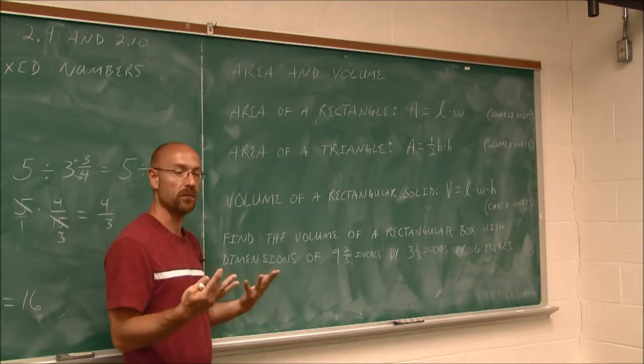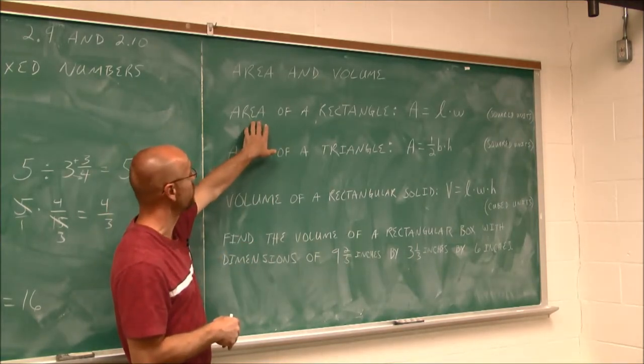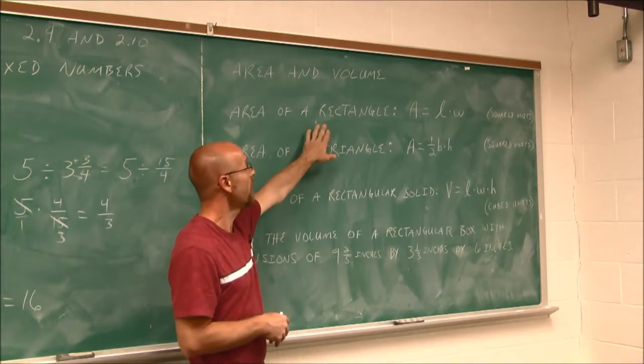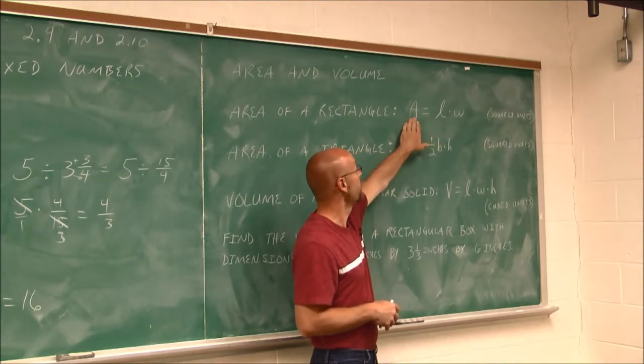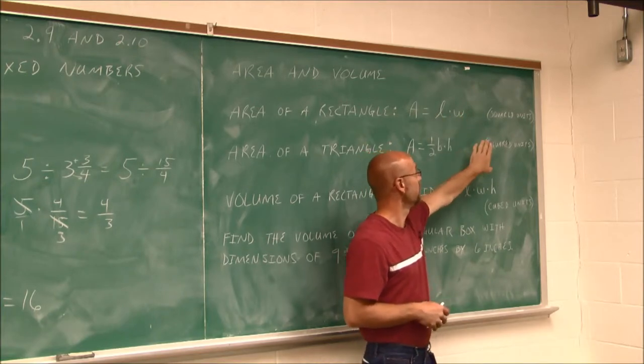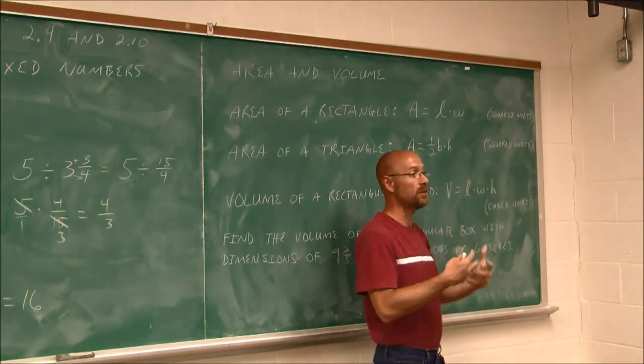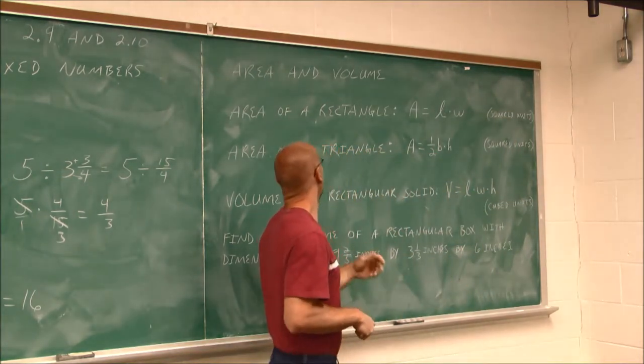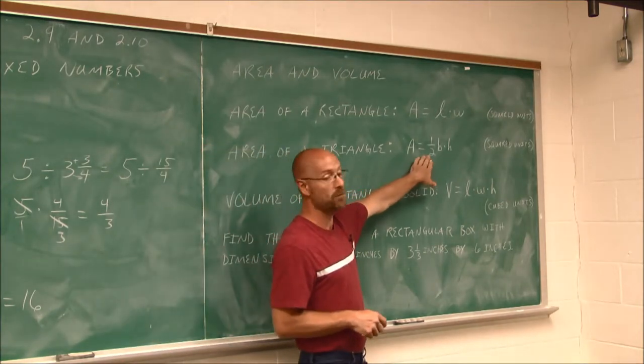Here we have mixed numbers. So when we're discussing distance, maybe we're finding the area of a rectangle. Now this is a formula we've seen before. And hopefully we have this committed to memory. The area is the length times the width. And we abbreviate that L and W. And we always remember, area gives us squared units. Maybe it's inches squared, or miles squared, or we'd say square miles.